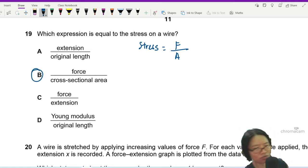Just to finish off, extension per unit original length is strain, and then this is stress. Force over extension is a spring constant.